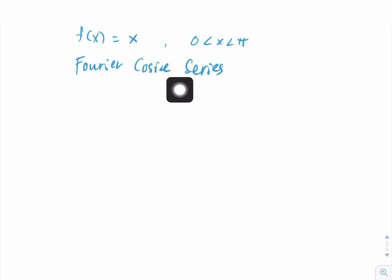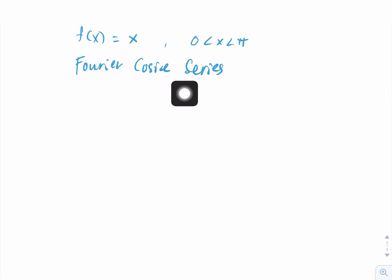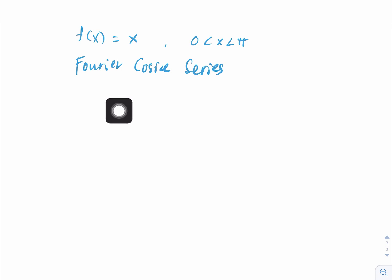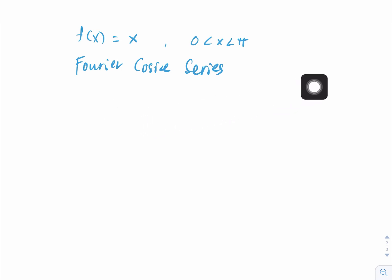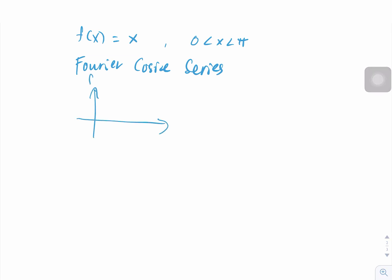In the Fourier cosine series, if f(x) is even then we can get the Fourier cosine series, but if f(x) is odd, we get the Fourier sine series. Let's look at the graph of this function.